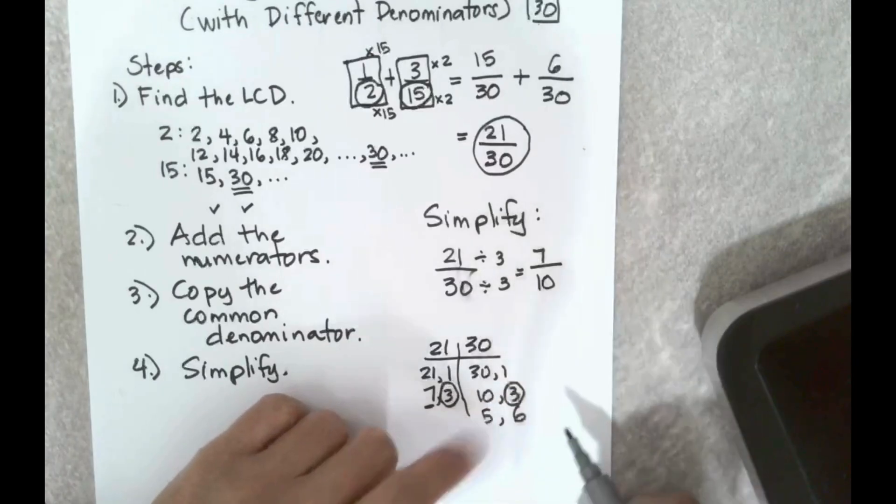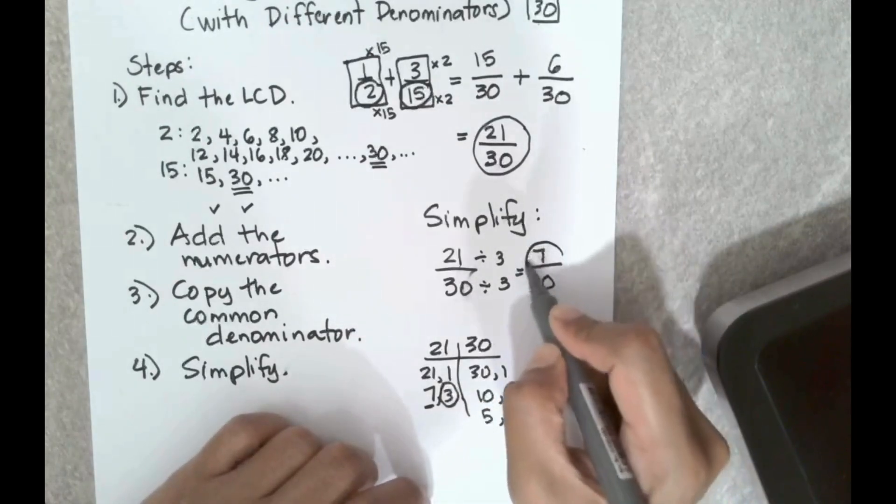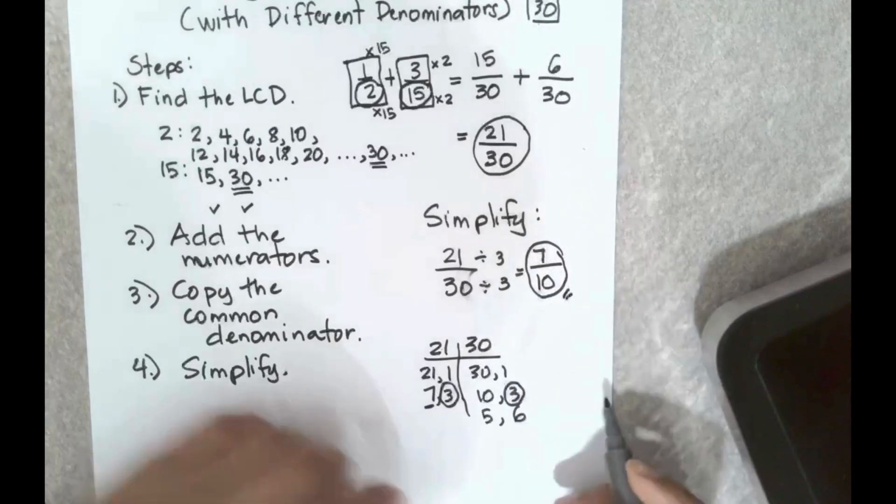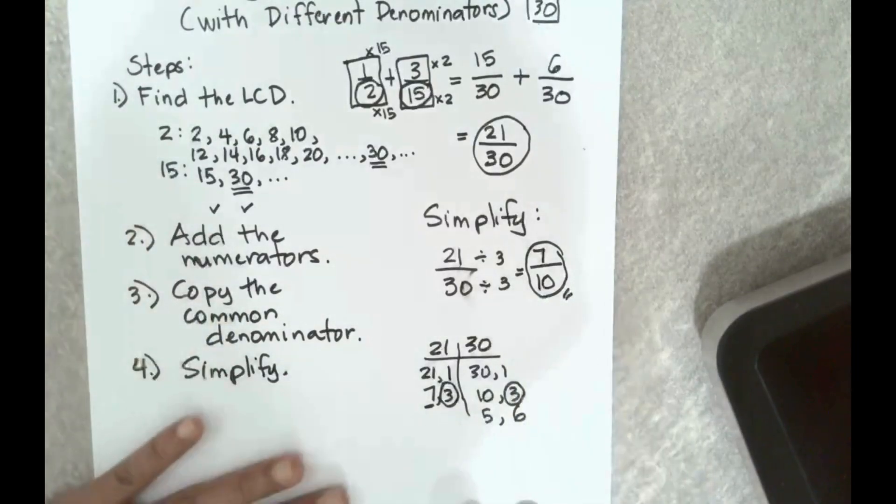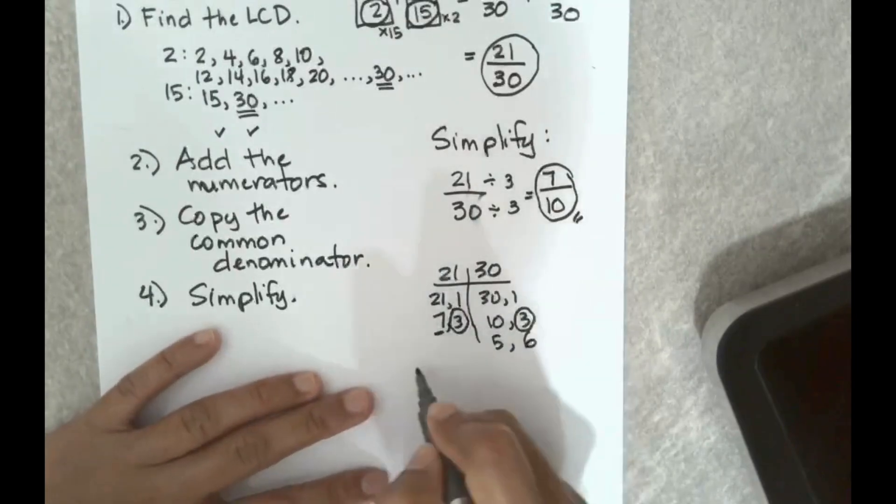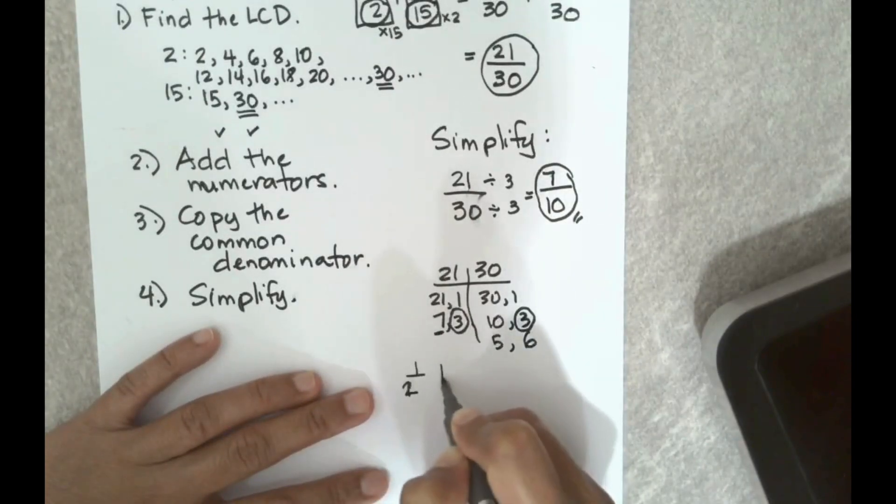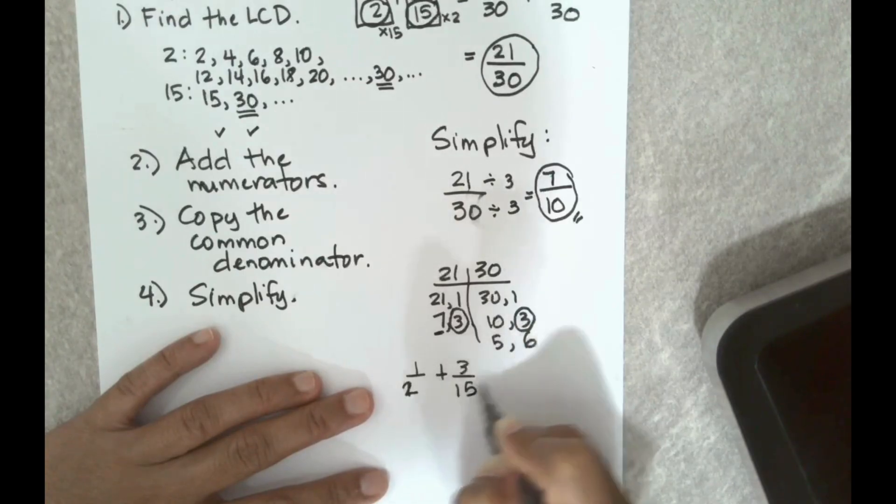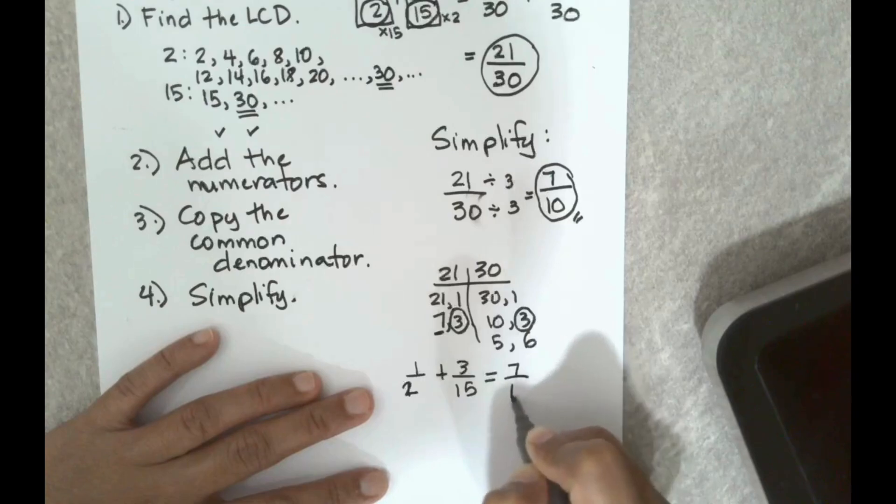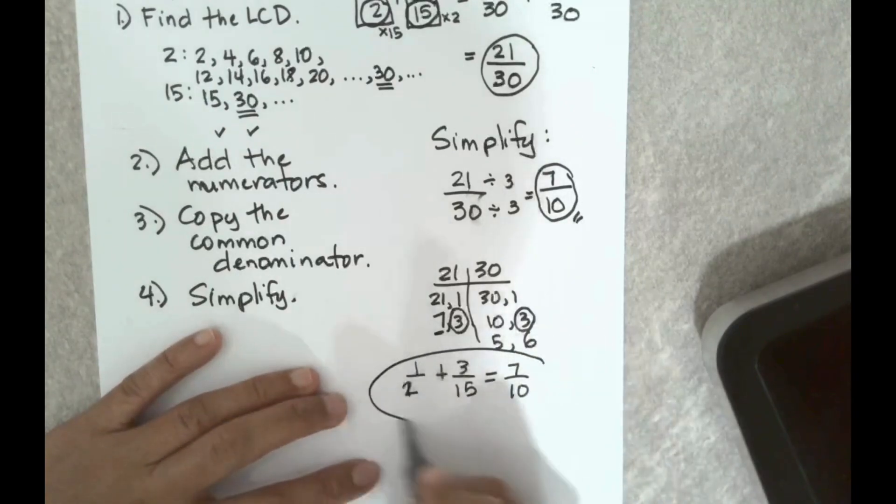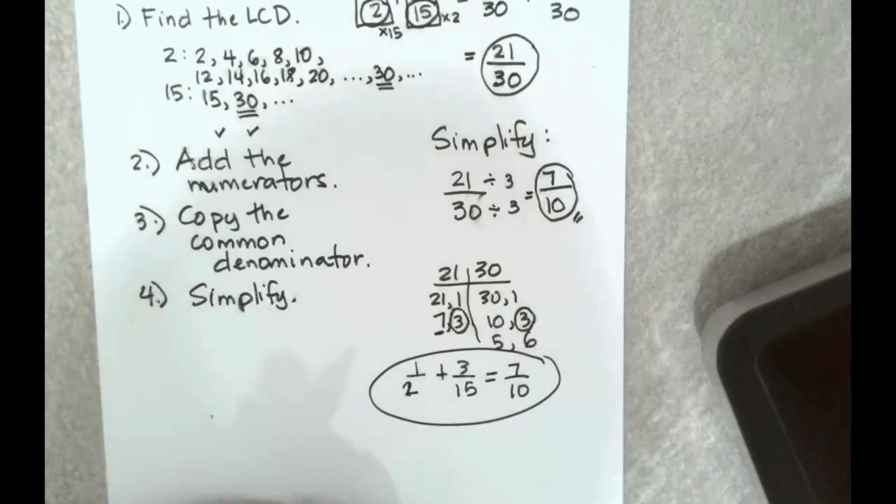So to summarize, 1 half plus 3/15 is equal to 7 tenths. Thank you very much, I hope this helps.